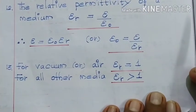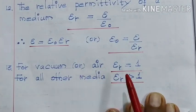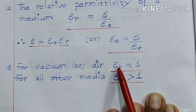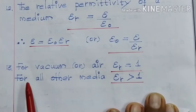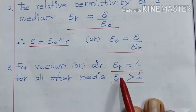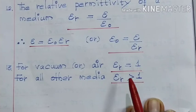Then, for vacuum or air, the relative permittivity εᵣ = 1. For all other media, εᵣ > 1.